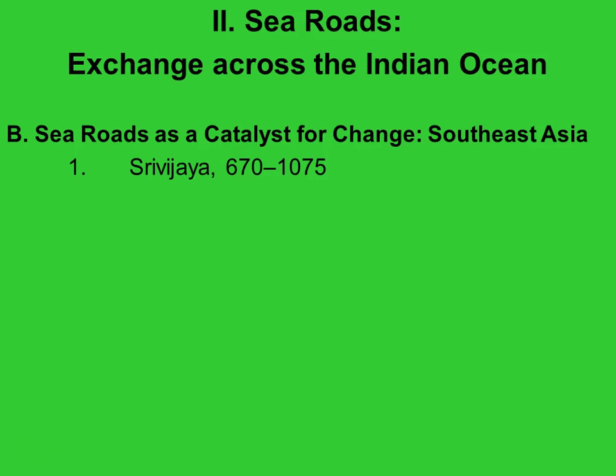The second was a Hindu state centered in what is now Cambodia — the Khmer Empire. The Khmer had a strong agricultural base but also traded forest products with Chinese and Indian merchants. They also developed a way to manage the monsoon rains to create reservoirs providing fresh water for a growing population. Eventually, however, the population outgrew the water supply and the empire dissolved.